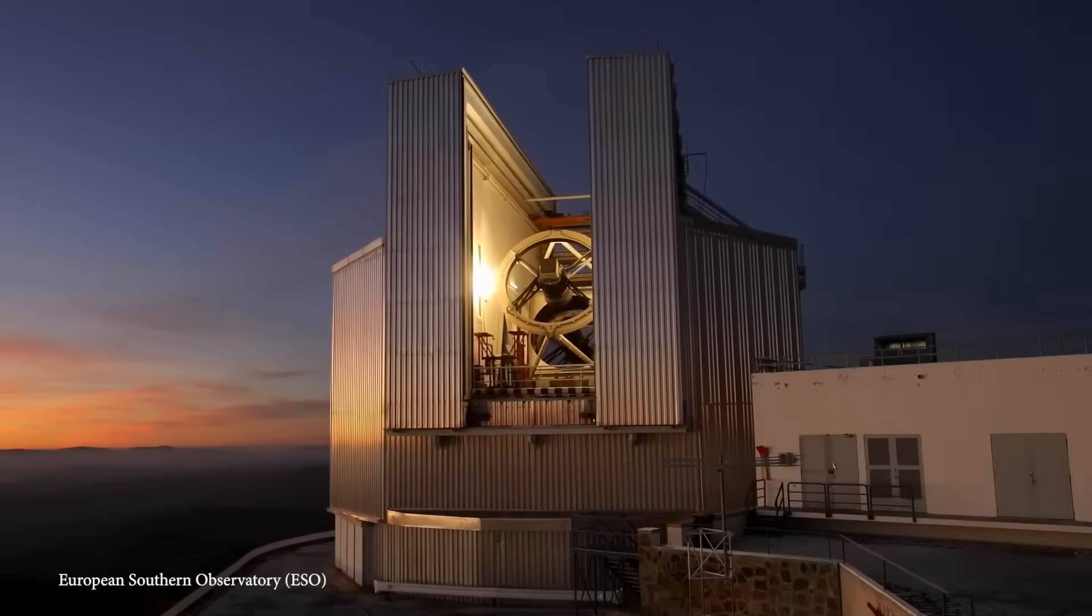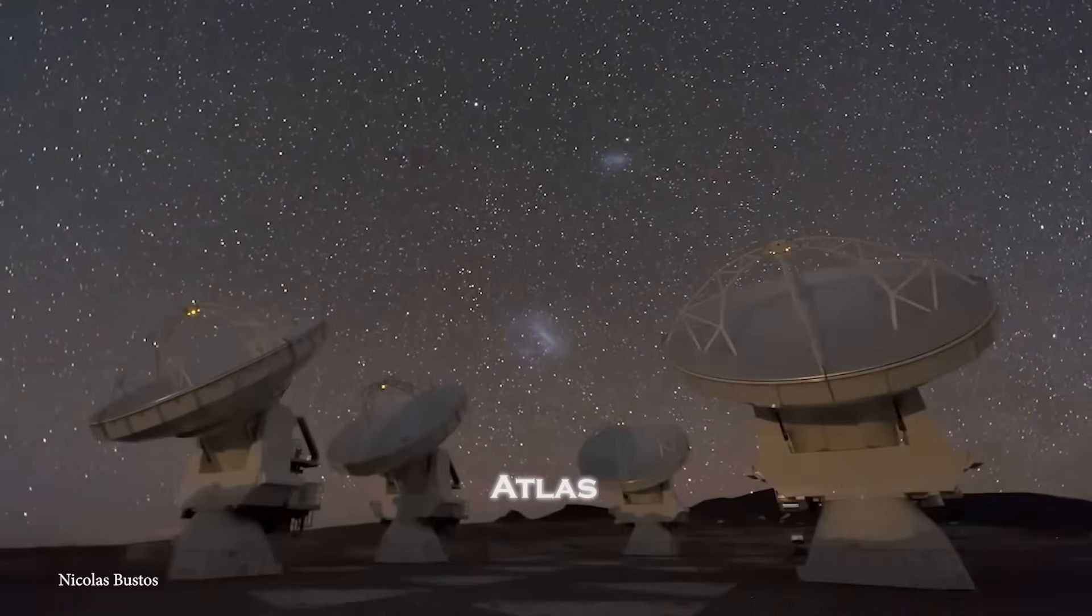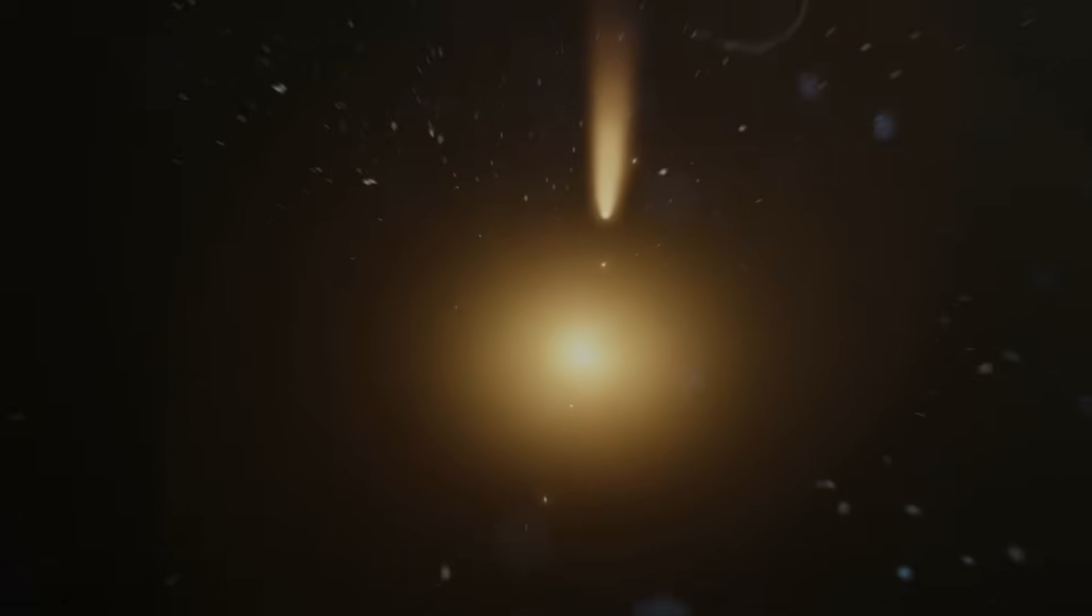The story begins innocently. July 1st, 2025. Chile's Atlas Survey Telescope spots a faint object drifting into the inner solar system. At first, nothing seems unusual.